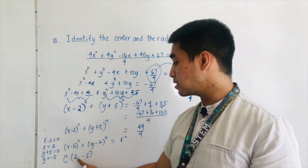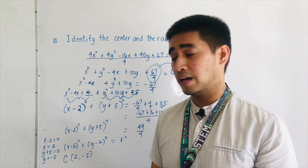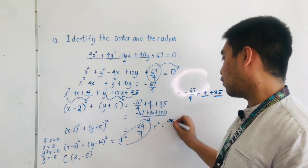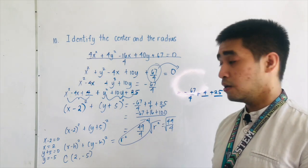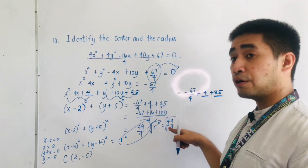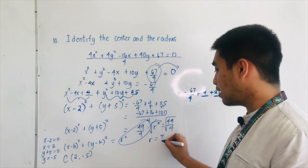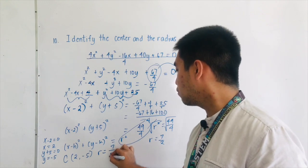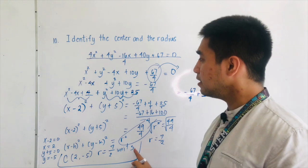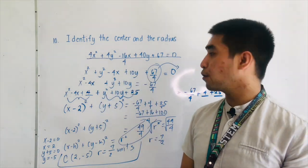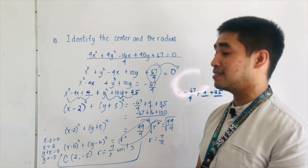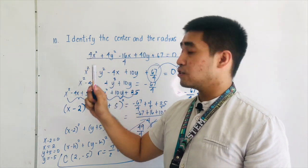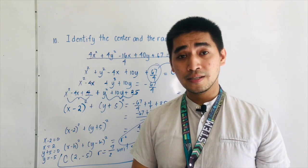We are given r squared equals 49 over 4. To find r, take the square root: square root of 49 is 7, square root of 4 is 2, therefore the radius is equal to 7 over 2 units. This is the center and radius of the equation 4x squared plus 4y squared minus 16x plus 40y plus 67 equals 0. Always remember: if given this kind of example, look at the coefficients of x squared and y squared first, then proceed with the numbers.